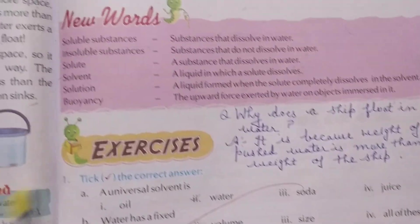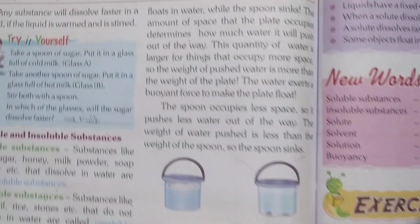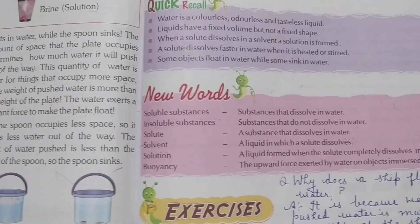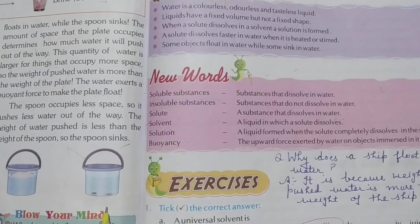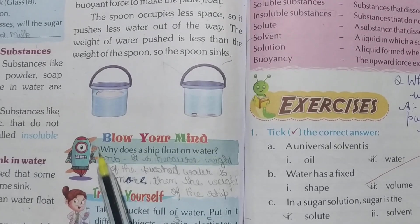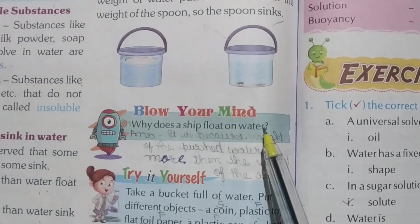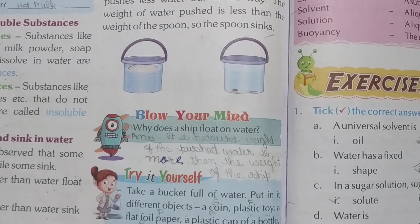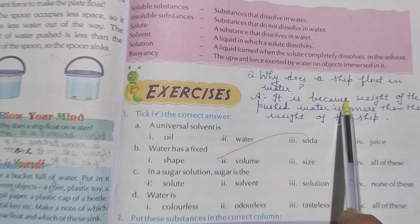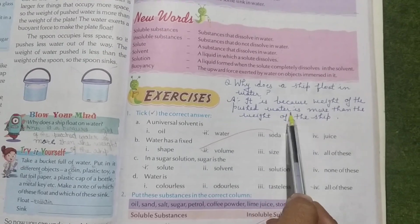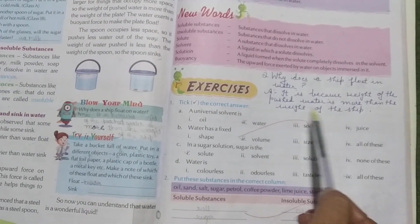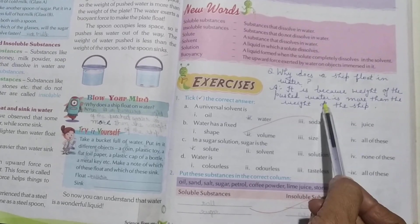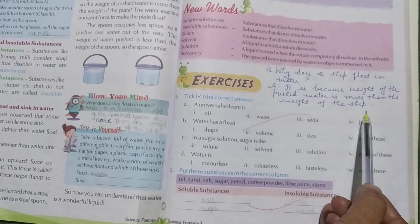Today we will do all the back exercises. Ok students, page number 57. First, 'Blow Your Mind' on page number 56: Why does a ship float on water? Answer: It is because the weight of the pushed water is more than the weight of the ship.